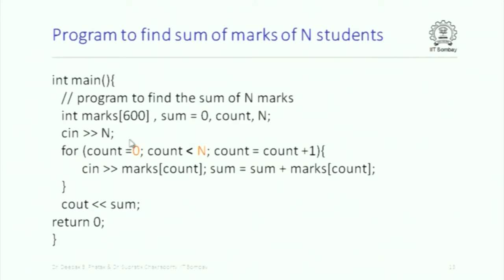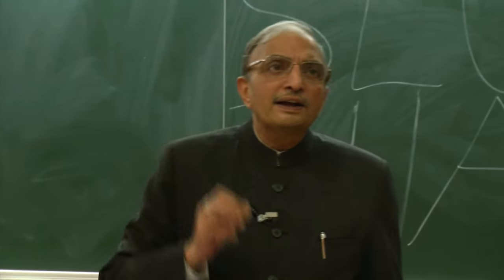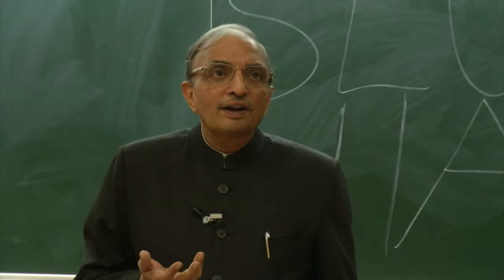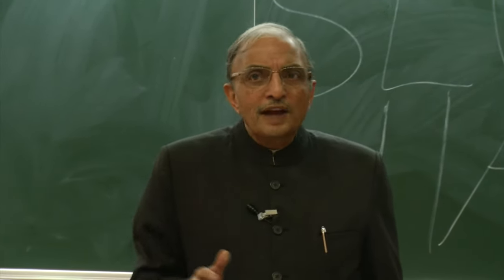The array has n elements, so you read n — basically, like in CS101 there are 600 students but not all, say 573 students, may give the quiz. So the exact number of students who give the quiz needs to be entered. This reads the array: as soon as it reads a marks element, it adds that element to sum, and at the end you output the sum. Now, if my intention was only to find the sum of n marks, do I need an array? Yes or no? If I only want to find the sum, I don't need an array at all.